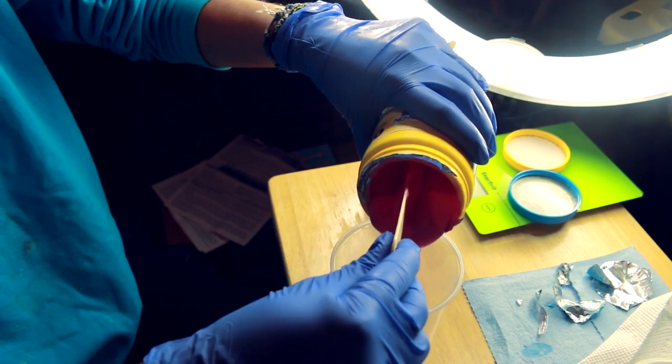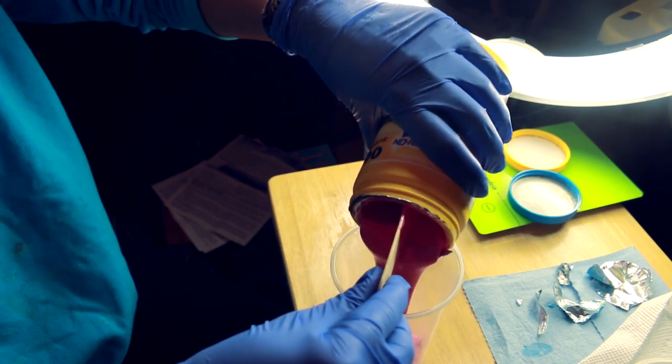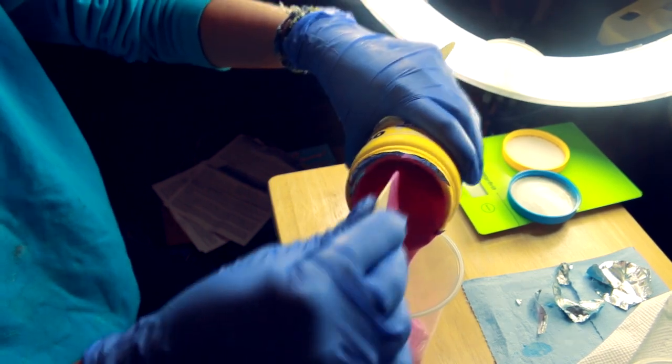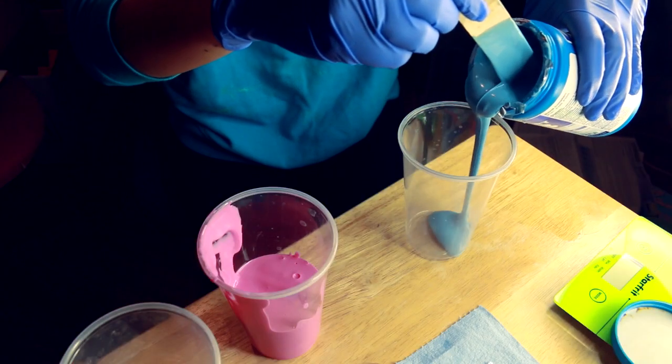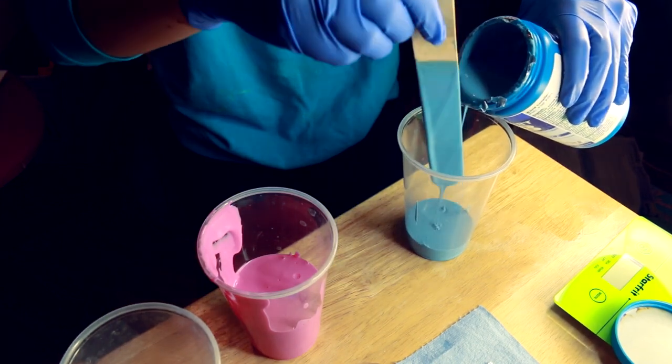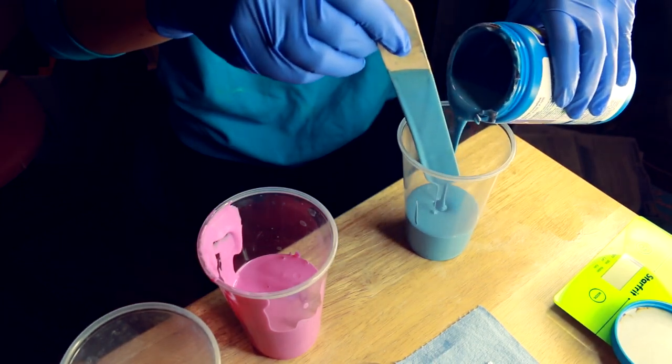So you want to pour one part of the silicone into one plastic cup and the other part of the silicone into a separate plastic cup. And you basically just have to eyeline the levels making sure that they look approximately the same in height.